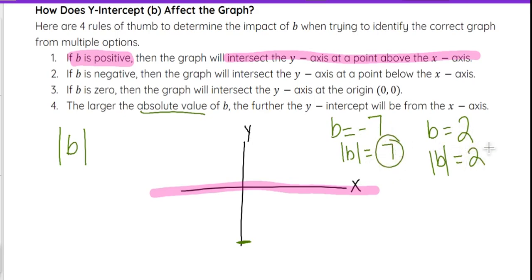So even though one of them is negative, one of them is positive, we can compare the positive versions to see that negative 7 is going to be further away than 2 in reference to that x-axis.